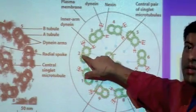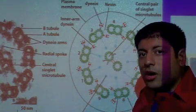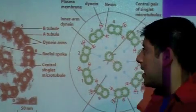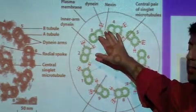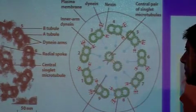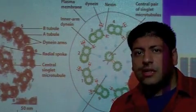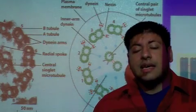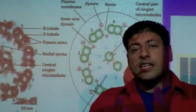Then you also have spacer proteins found in between all the neighboring doublets on the outside. This is a very important protein and we call this protein nexin, N-E-X-I-N. So nexin is found in between neighboring doublet microtubules on this outer ring here.